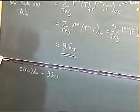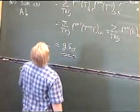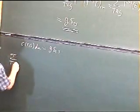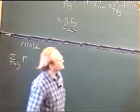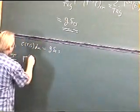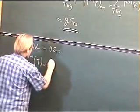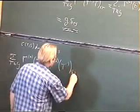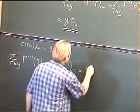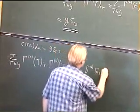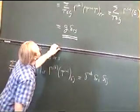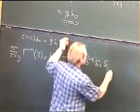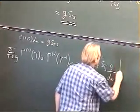So now we compare this to this, and what we learn is C, R, S times D, A is equal to G times delta R, S. That tells us we've got a formula for B, A, B. The full formula is: a sum over T in G of gamma A of T, I, R times gamma B of T to the minus one, S, J equals delta AB times delta RS times delta IJ times G divided by DA.